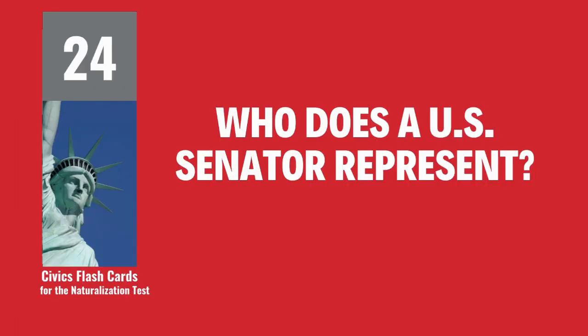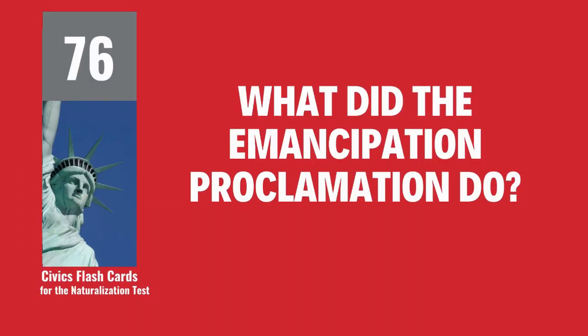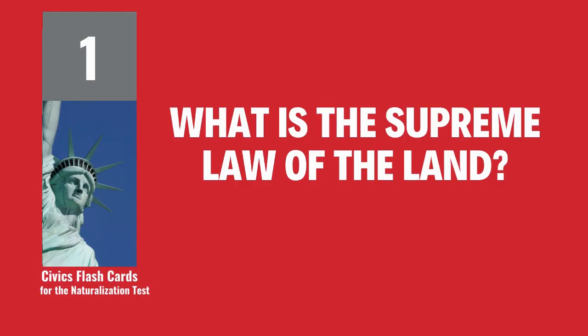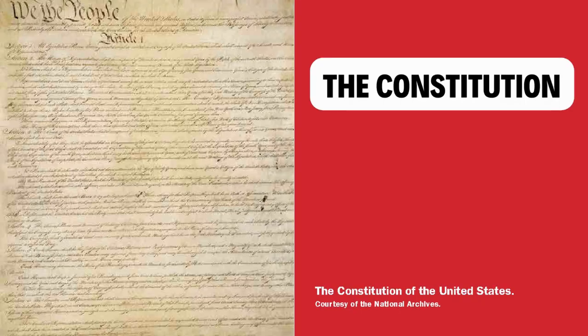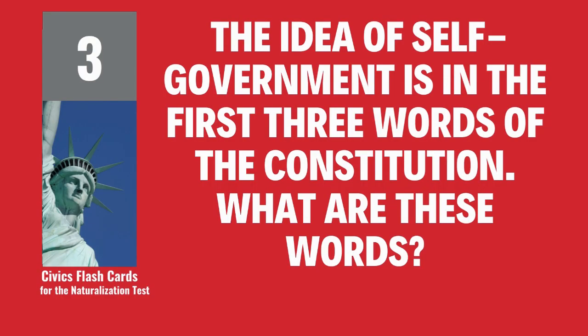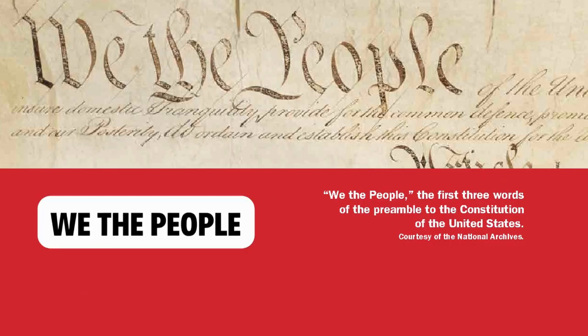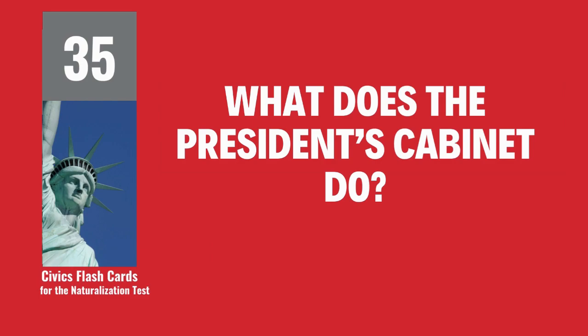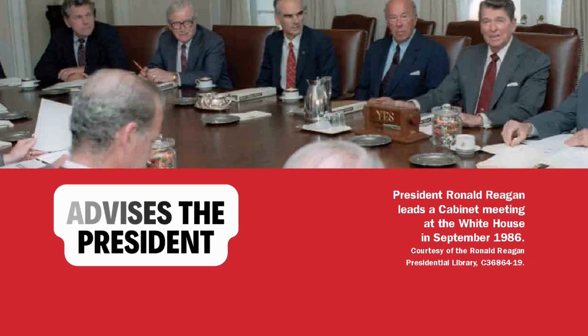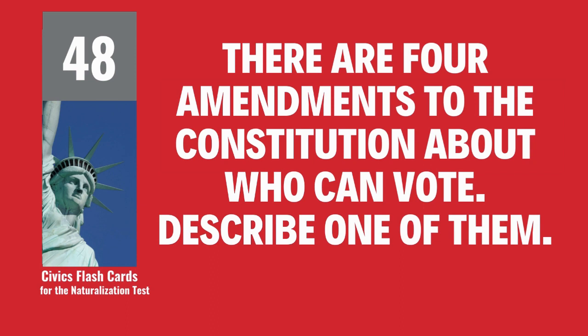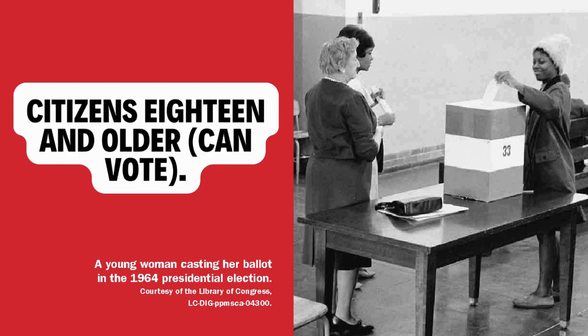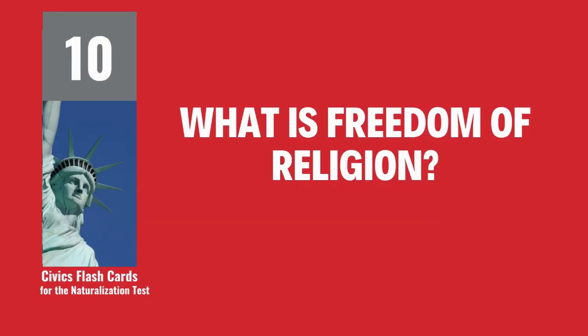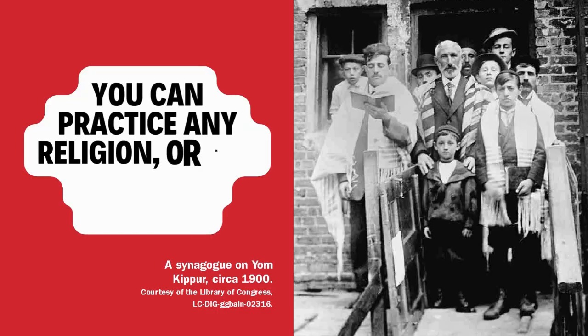Who does a U.S. senator represent? All people of the state. What did the Emancipation Proclamation do? Freed the slaves. What is the supreme law of the land? The Constitution. The idea of self-government is in the first three words of the Constitution. What are these words? We the people. What does the President's Cabinet do? Advises the President. There are four amendments to the Constitution about who can vote. Describe one of them. Citizens 18 and older can vote. What is freedom of religion? You can practice any religion, or not practice a religion.